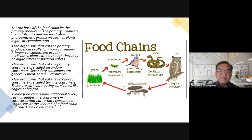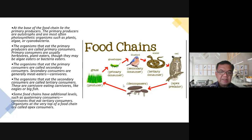At the base of the food chain lie the primary producers. Primary producers are autotrophs and are most often photosynthetic organisms such as plants, algae, and cyanobacteria.